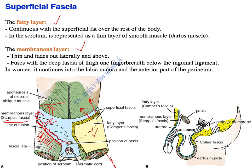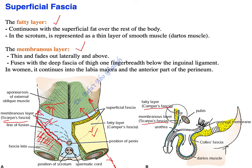This is a cross-section taken from the male. You can see the fatty layer — the fatty layer is called Camper's fascia, and the membranous layer is called Scarpa's fascia. The fatty layer will disappear over the penis, and over the scrotum the fatty layer will be replaced by a thin layer of muscle called the dartos muscle.